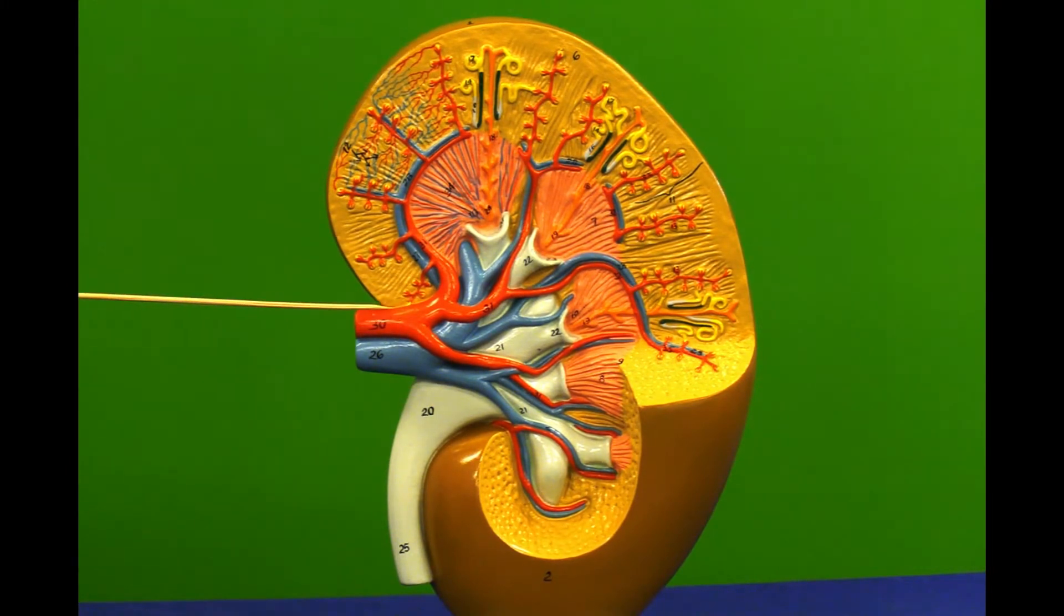We can see the renal artery, the renal vein, and the ureter which would exit the kidney with urine.